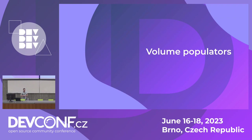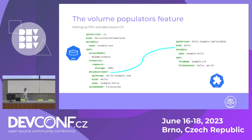Now let's talk about the volume populators feature, a recent feature that landed in Kubernetes and OpenShift. Its purpose is to import data from remote sources to our cluster. I'll demonstrate using resources shared in a blog post about this feature. On the left-hand side we see an example PVC, and looking at its spec we see the data source ref — the first part of the volume populators feature. This allows us to point to another CR, in this case a CR called 'example-hello' of kind 'hello'.